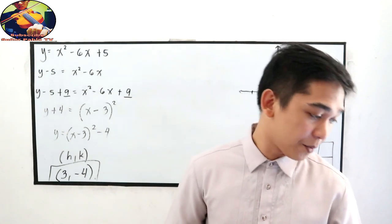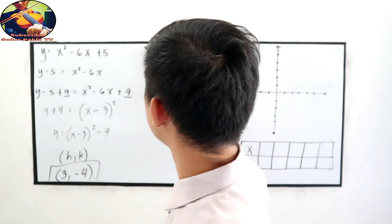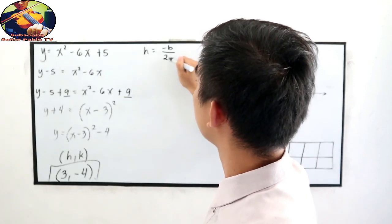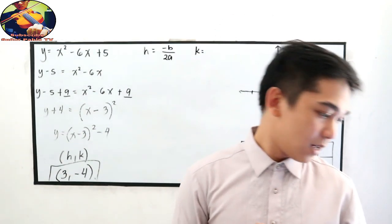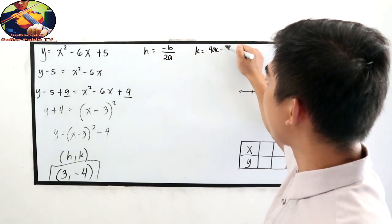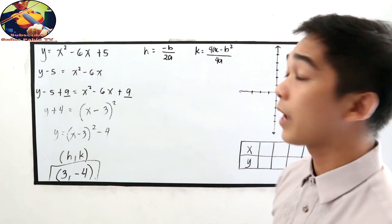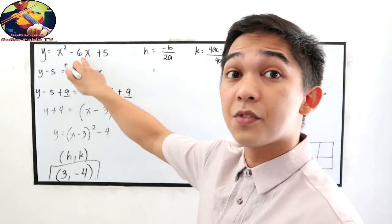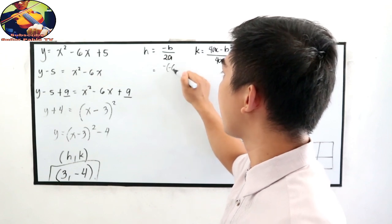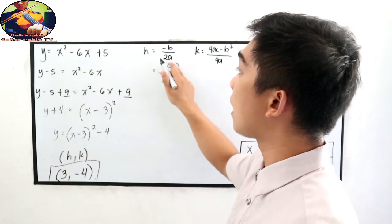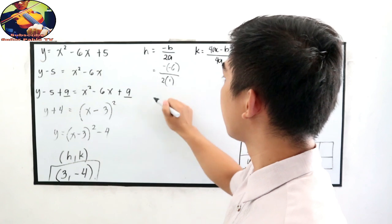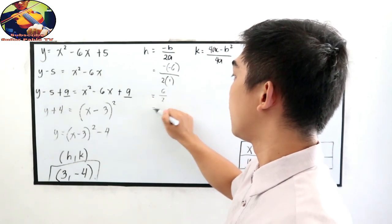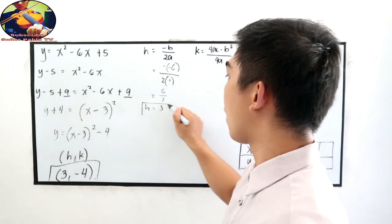Let us also try using the formula. To find h, we use negative b over 2a. Substituting: negative times negative 6, over 2 times a which is 1. Negative times negative gives positive 6, over 2 times 1 equals 2. This gives us h equals 3.